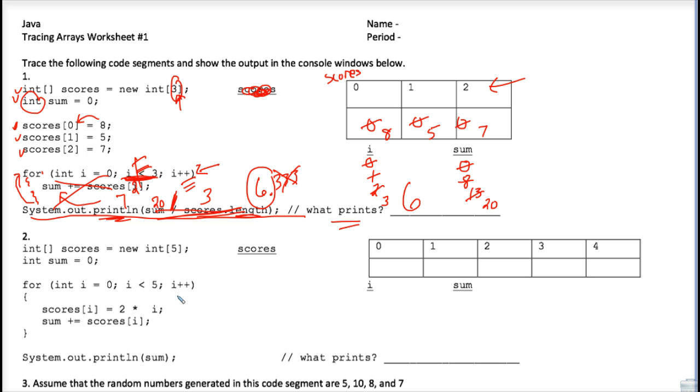I'm not going to do number 2 for you, but I'll just hit the highlights. I see that we have an array of length 5. Everything's initialized to 0s at the beginning. This for loop will iterate 5 times. And each time it iterates, we are storing 2 times i into the corresponding position of scores that matches i at that moment.